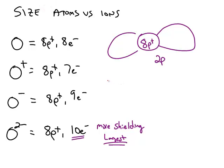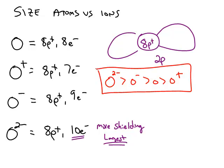So the anions are greater in size than the neutral atoms, and the neutral atoms are greater in size than the cations. So in this case, oxygen with the negative 2 charge is the largest, and oxygen with the positive 1 charge will be the smallest.